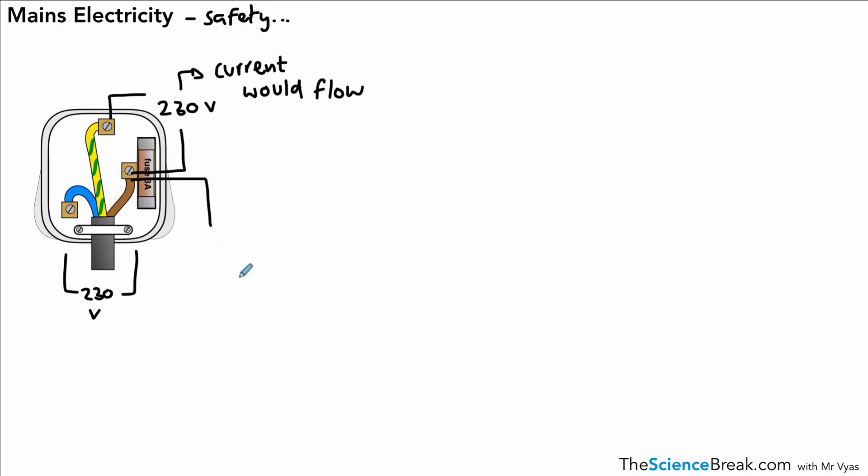But the other thing also is that if that live wire was connected to the earth directly, and by earth we literally mean the floor or the ground, if that somehow became connected to the floor or the ground, in other words earth, we would have a potential difference of 230 volts between the live and the earth as well.